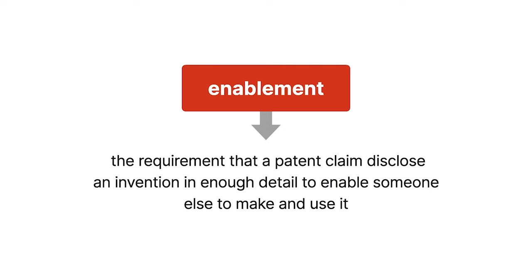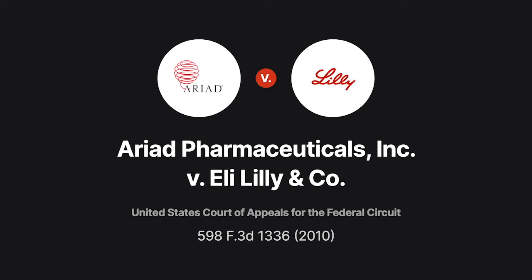Enablement is the requirement that a patent claim disclose an invention in enough detail to enable someone else to make and use it. The avidly watched biotech patent case, Ariad Pharmaceuticals v. Eli Lilly, considered whether patent law requires a description of the invention in addition to the enablement requirement.